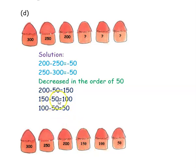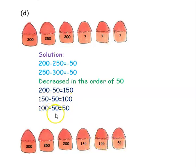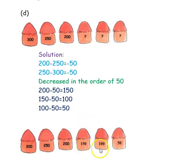Then we subtract 50 again — so 150 minus 50 is 100. To find the last number, we subtract 50 from 100 — so 100 minus 50 is 50. So the missing numbers are 150, 100, and 50.